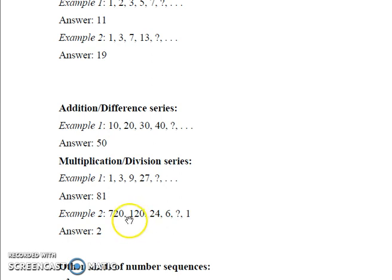So if you see the pattern, the numbers are being divided by 6, 5, 4, 3 and so on. 720 is divided by 6, 120 is divided by 5, 24 is divided by 4. So 6 must be divided by 3 to obtain the next term in the sequence. Hence, the answer is 2.